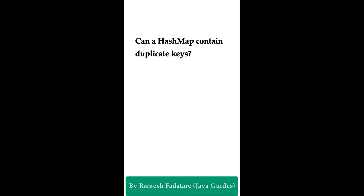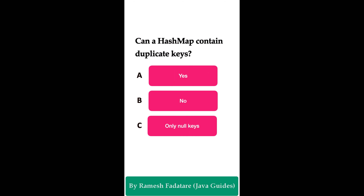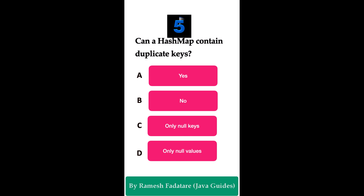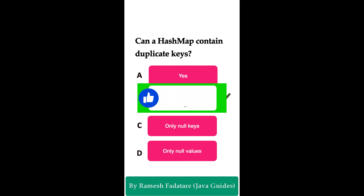Can a HashMap contain duplicate keys? Option A: yes. Option B: no. Option C: only null keys. Option D: only null values. The correct answer is no. In a HashMap, each key is unique. Adding a new entry with an existing key replaces the old value with the new one. Each key in a HashMap must be unique, and if you add an entry with an existing key, it replaces the old value.